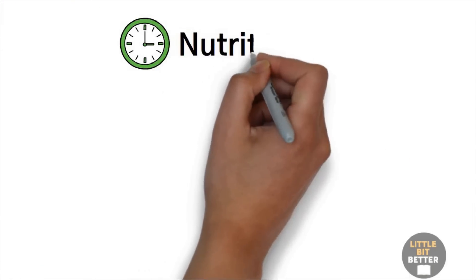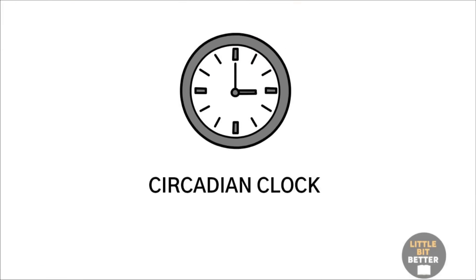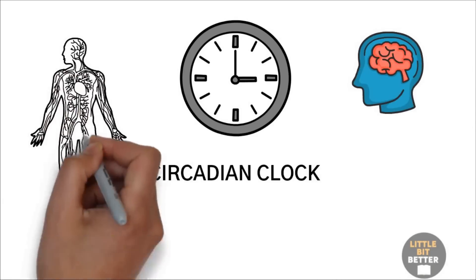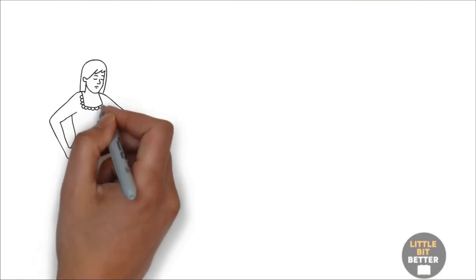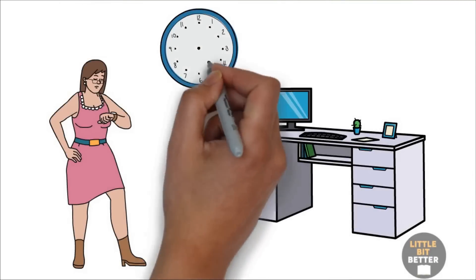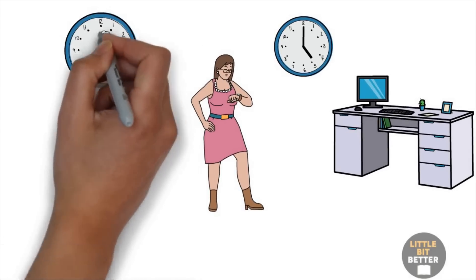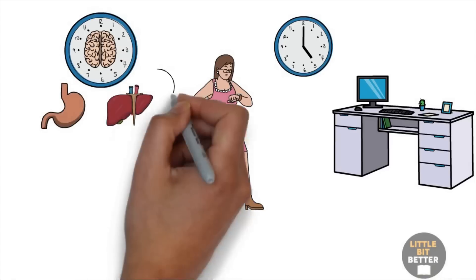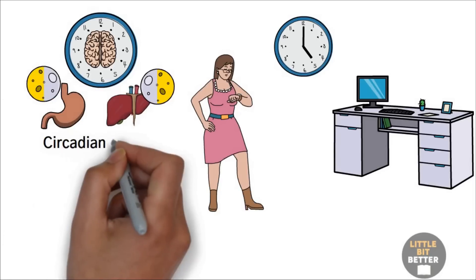We'll start with nutrition, but first, let me explain what circadian clock is, because it controls everything that is happening in your brain and body. Every single thing in your life happens in rhythm. For example, you have to be at work at a certain time and leave at a certain time. Similarly to your working hours, your brain and every single organ in your body have working and resting hours that are controlled by their individual clocks, also known as circadian clocks.